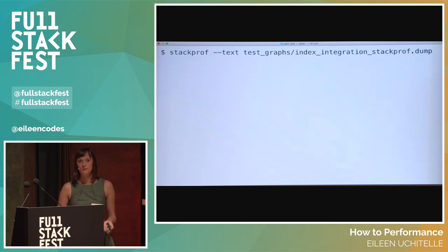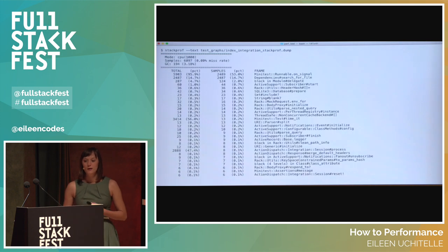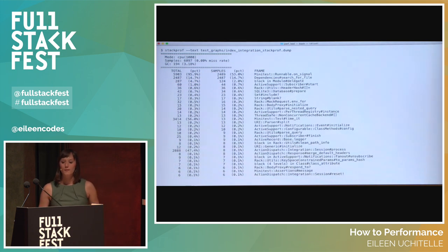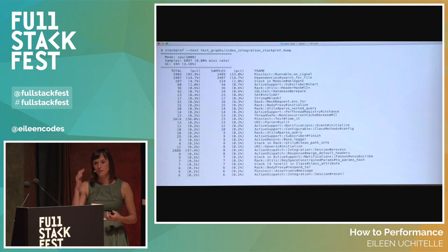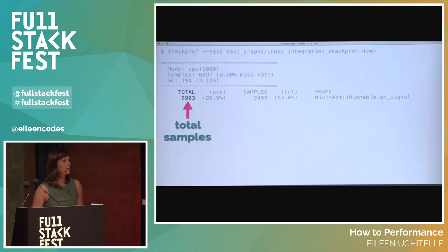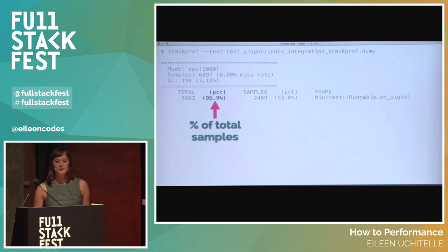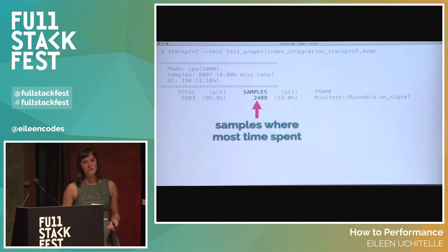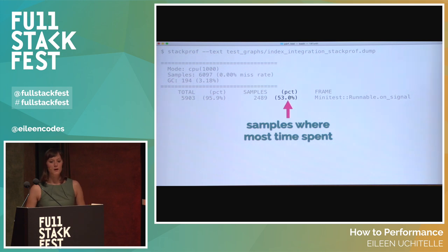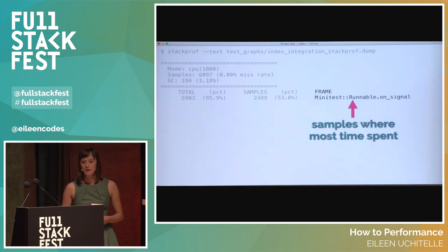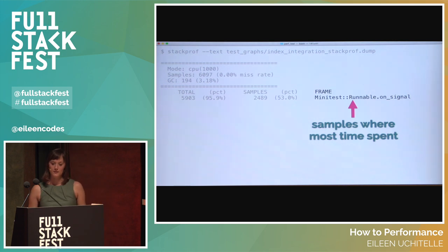To view StackProf output, type 'stackprof --text' and the path to the dump file named in your script. This will show you the sample profile of your Ruby code. The stack is sorted by time spent in each frame at the top, so you know the top is going to be your biggest problem method. The first column is the total number of samples where this frame was in the stack. Next is the percent of time all samples spent in this frame. Then StackProf shows the number of samples where this was the topmost frame, and the percent of time where this method was the topmost frame. Lastly it shows the method called in this frame.